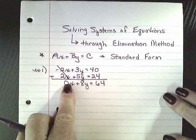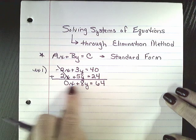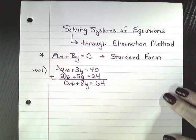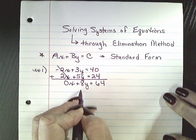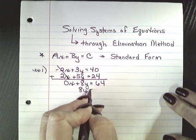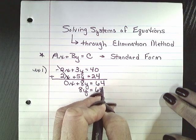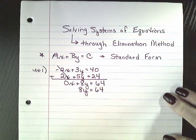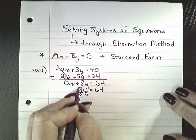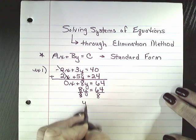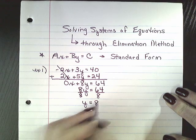So now I've eliminated one of the variables and now I can just solve for the y. So we know that 0x doesn't even belong there. So we're going to say 8y is equal to 64. Solving an equation, we divide both sides by 8. y is equal to 8.